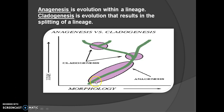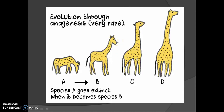Anagenesis is progressive evolution, whereas cladogenesis involves splitting. Evolution through anagenesis is very rare and less common because it is a non-branching evolution. There will be extinction of the parental species — as you can see in the figure, species A gets converted into B, then C, and finally D, with A becoming extinct.